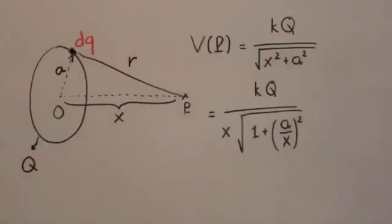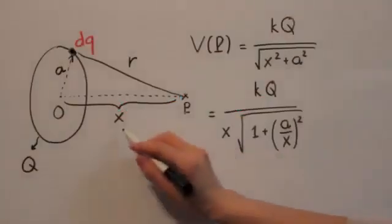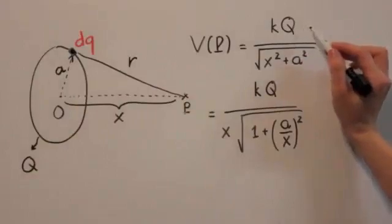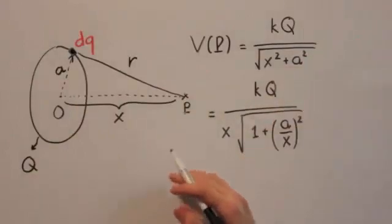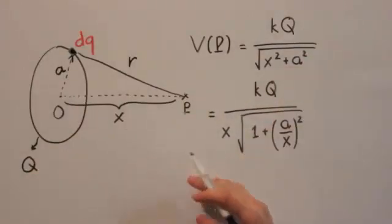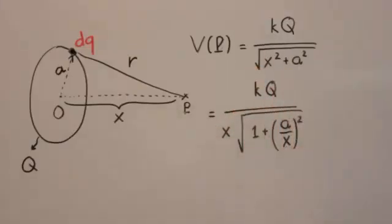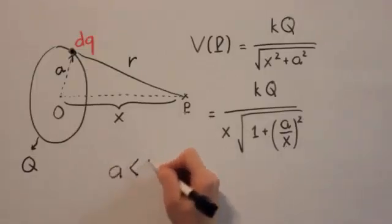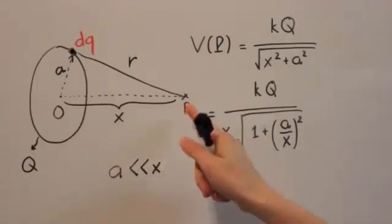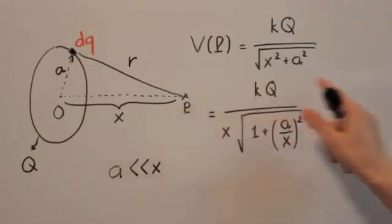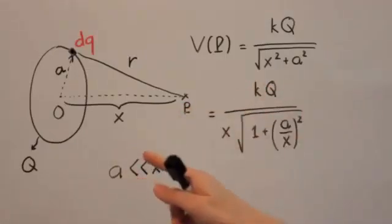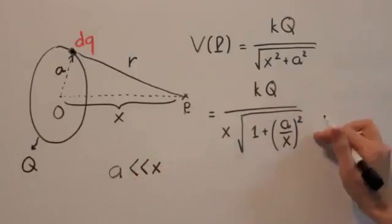The electric potential depends on x, a, k and Q. In this case, we want to find the relationship between x and a. What happens when a is really small compared with x? It means point P is really far away from the ring. Look at this formula - I just factor out x.